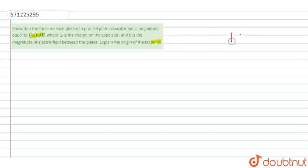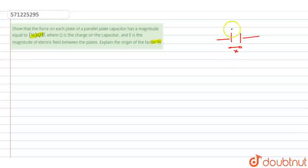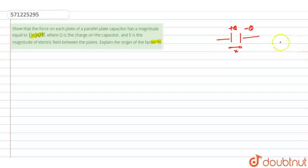Suppose this is the parallel plate capacitor and the distance between the plates is X initially. Now we know this plate has charge Q and the other plate has charge minus Q. So there will be an attraction force acting between the plates — that will be the force of attraction. And this force we need to prove as (1/2)QE.